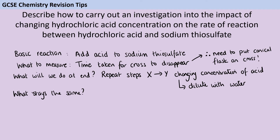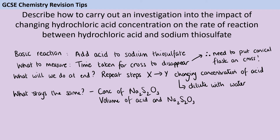For control variables, the concentration of the sodium thiosulfate must stay the same, since I should only change the concentration of one chemical at a time. Also staying the same will be the volume of both the sodium thiosulfate and the acid. It's really important to say 'volume' and not 'amount' — amount is chemistry speak for the number of moles, which is not what we're keeping constant, especially for the hydrochloric acid where concentration is changing. An easier approach is to just give a specific number, for example 'measure 10 cm³ of sodium thiosulfate', which also takes less time to write.